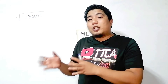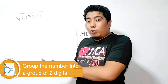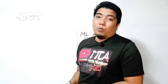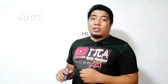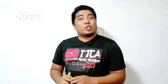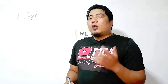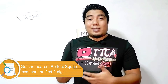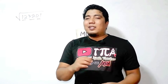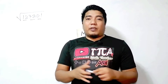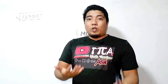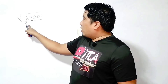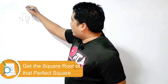What you will do is group the whole six-digit number by two digits. So you have 12, 32, and 01. What you need to consider is the first group, that is 12. You need to find the nearest perfect square that is less than the given, that is 12. What is the nearest perfect square less than 12? Of course, that is 9. So you get the square root of 9, and that is 3.